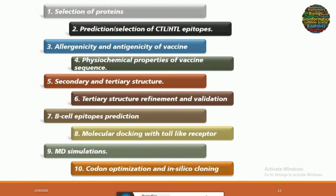Here are the different steps involved in designing a vaccine. The first step is selection of proteins within the proteome of that microorganism — you have to select the proteins that are most suitable for designing a vaccine. We have different parameters for this selection that we will discuss in coming lectures. Then we predict and select the HTL and CTL epitopes. We have different parameters for selecting the best CTL and HTL epitopes for designing this vaccine.